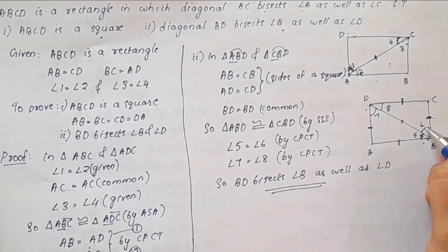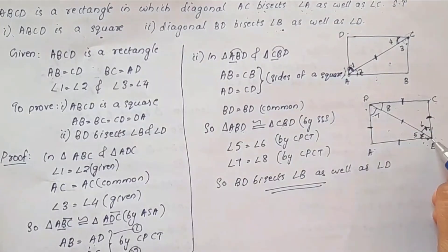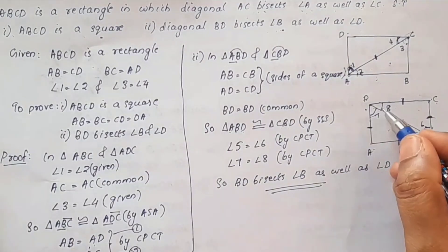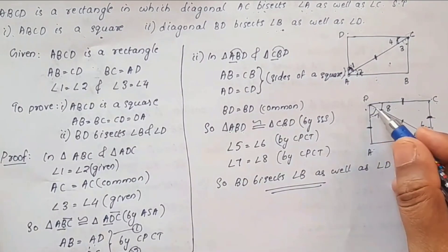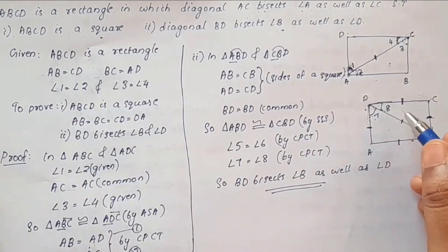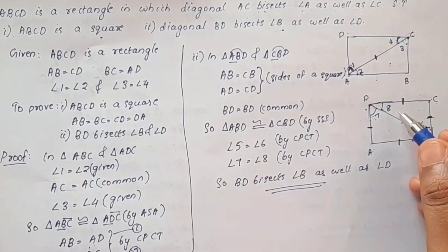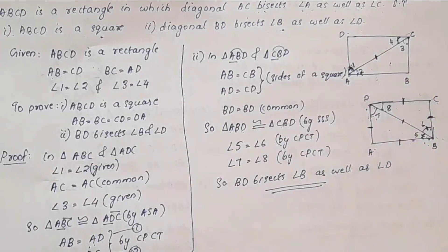BD bisects angle B and angle D. At the end of this video, we will see you in the next video.